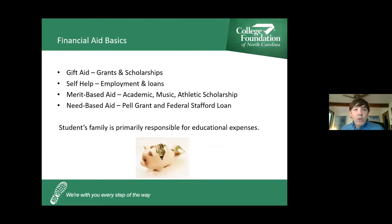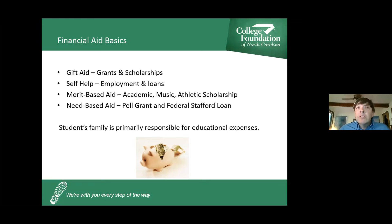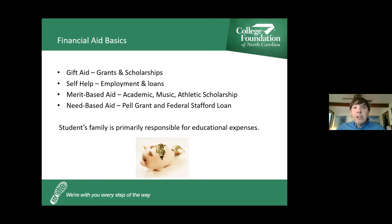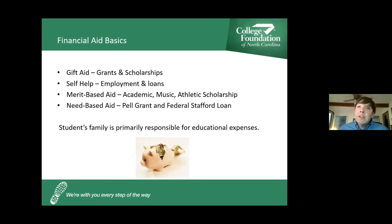A couple more terms: gift aid — grants and scholarships — is what we work to maximize during senior year. Self-help includes employment and student loans. If you're going to borrow, be extremely conservative because student loans have to be repaid and you cannot discharge federal loans through bankruptcy. Merit-based aid is a scholarship based on something that makes you special — ethnicity, race, gender, academic performance, musical inclination, etc. Need-based aid is based on a family completing the FAFSA and is dependent on the student's expected family contribution score. The lower the score, the more need-based aid the student is eligible for at the federal, state, and institutional level.